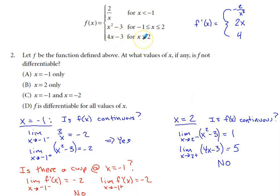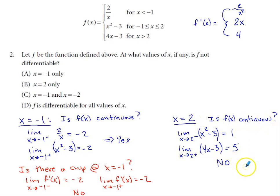On the bigger side of two, I would be on this bottom inequality. So using this bottom piece of the function, four times two minus three is five. I don't have a limit that exists at two. I am not continuous at the x of two. And because I'm not continuous, I know I'm not differentiable.